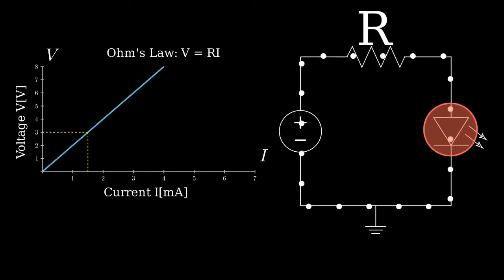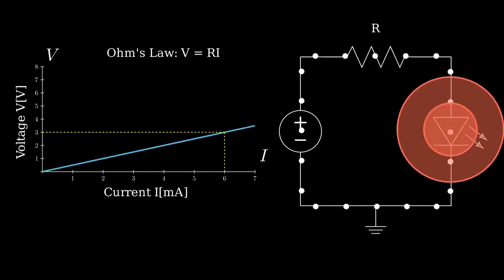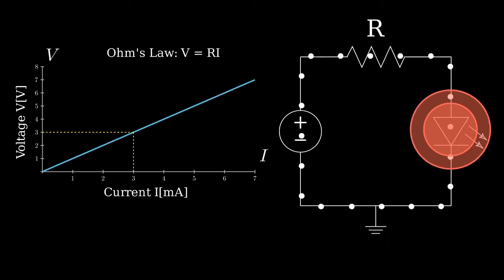So we can use the resistor kind of like a knob. Let's try decreasing the resistance. We see the LED gets brighter. If we try increasing the resistance, then the LED gets dimmer, which makes sense since it has less current going through it.